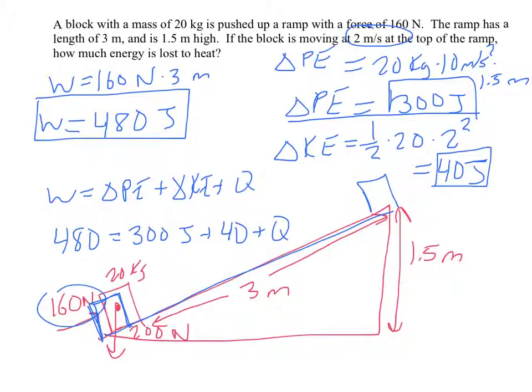So we lost 140 joules in the form of heat. Not as much this time. It can vary based on how much friction there is. So those are some things that work can do.